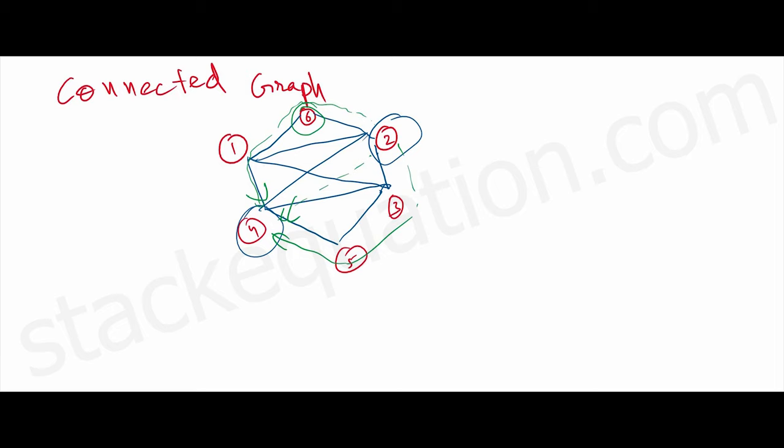one, or six to two, or six to four, or six to three. So such a graph is called a connected graph, where basically all the vertices are connected.